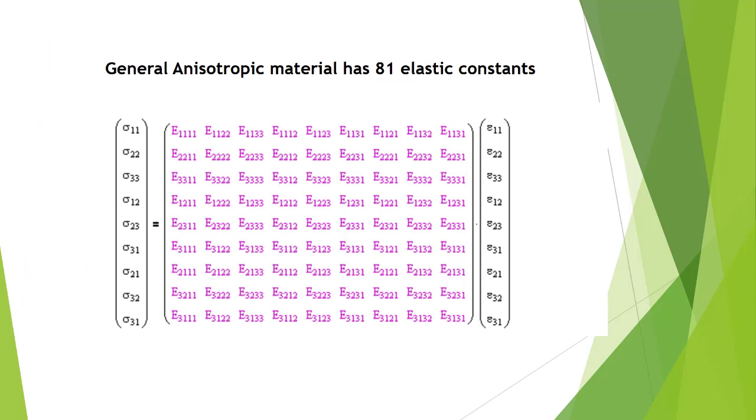Why are there 81 elastic constants? These 81 independent elastic constants exist because we require a 9 by 9 matrix in order to define the material's elastic nature property.